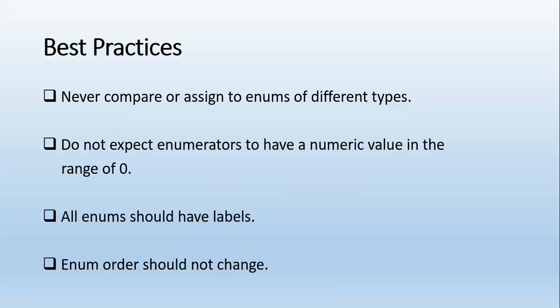Do not expect enumerators to have a numeric value in the range of 0. All enums should have labels. Enum order should not change.